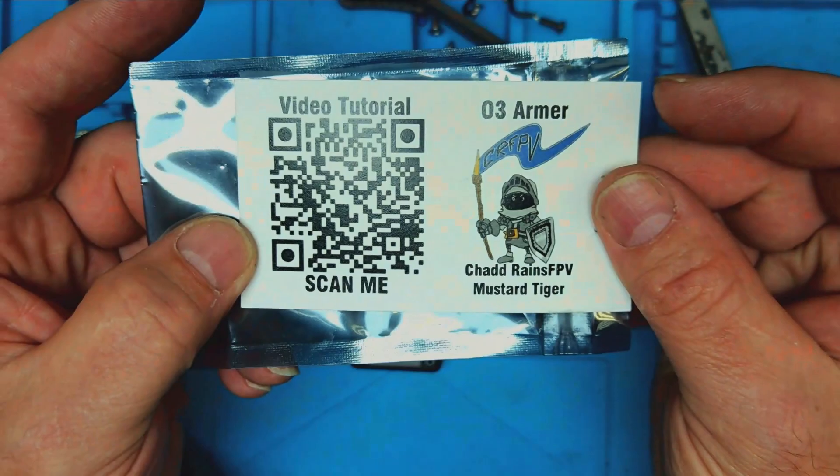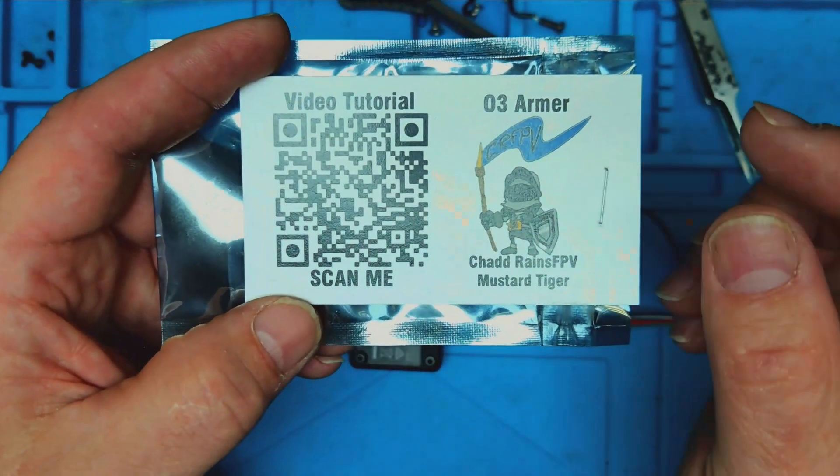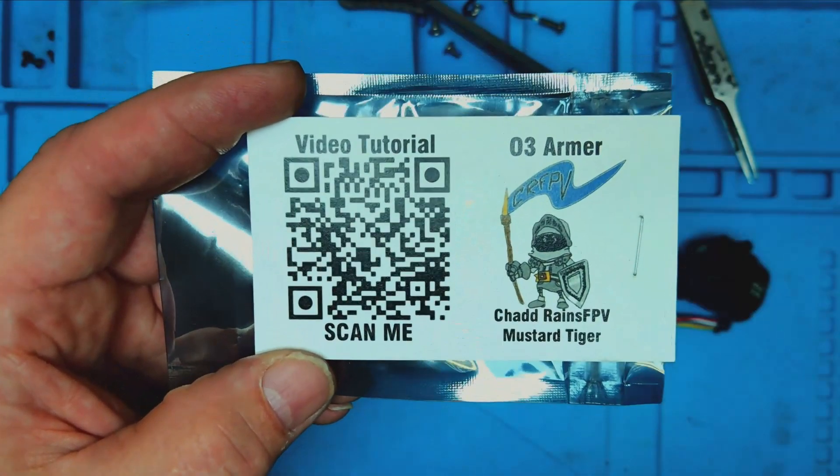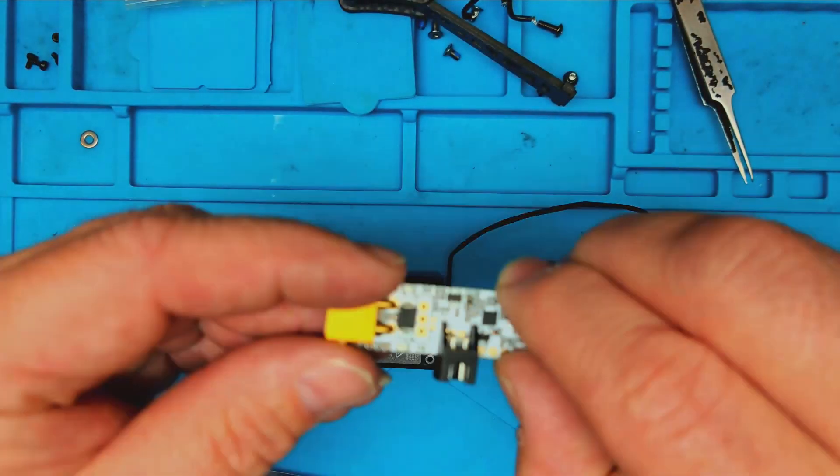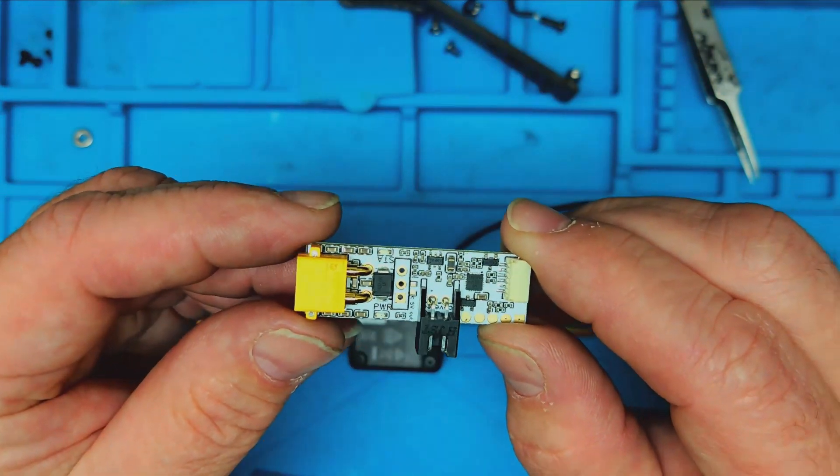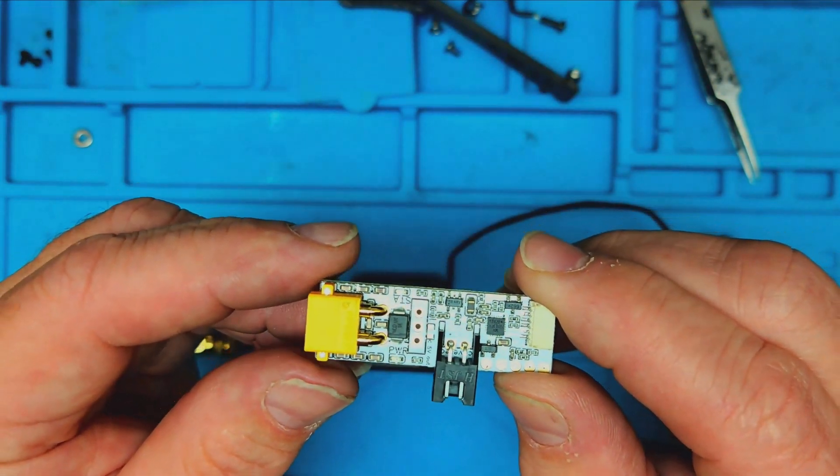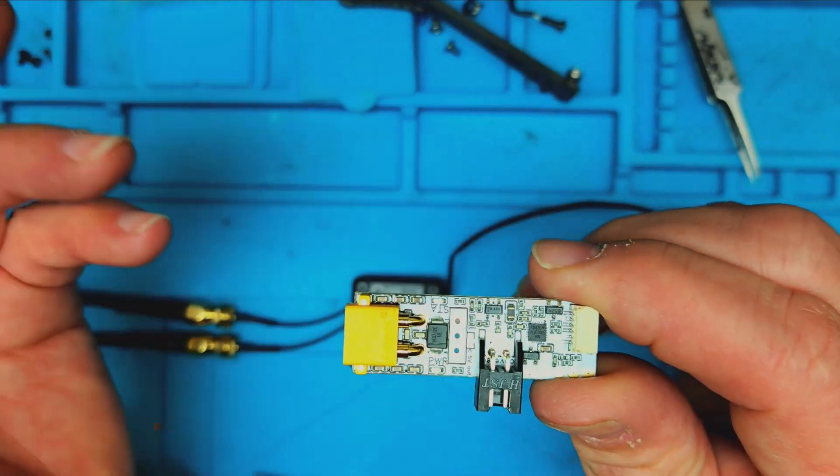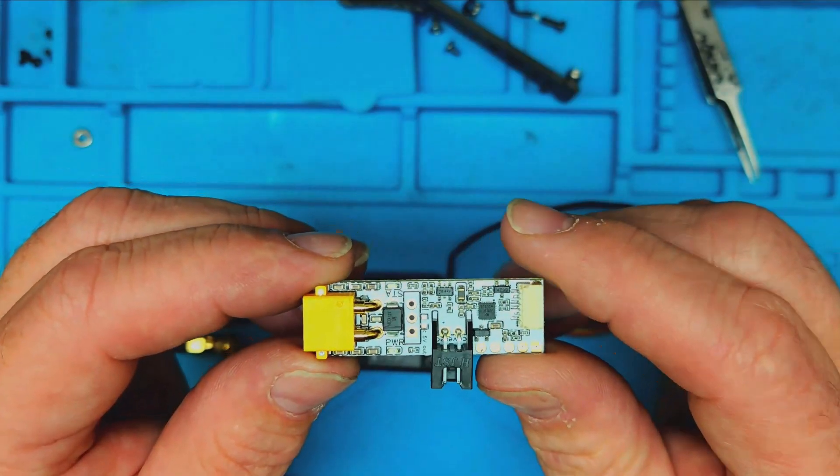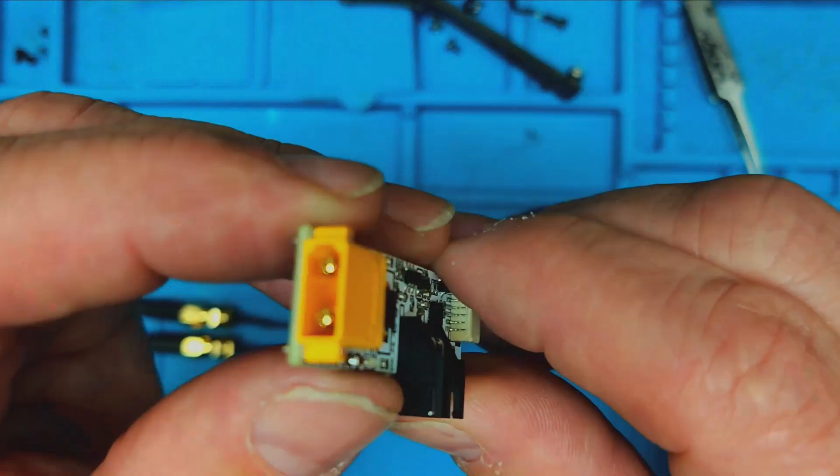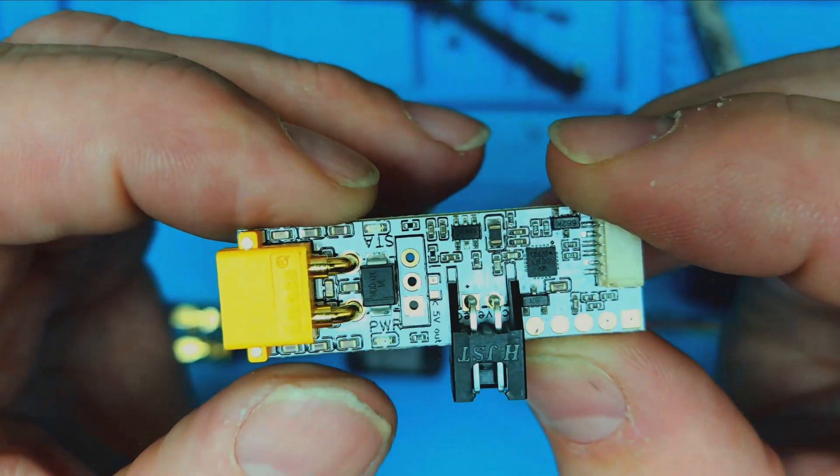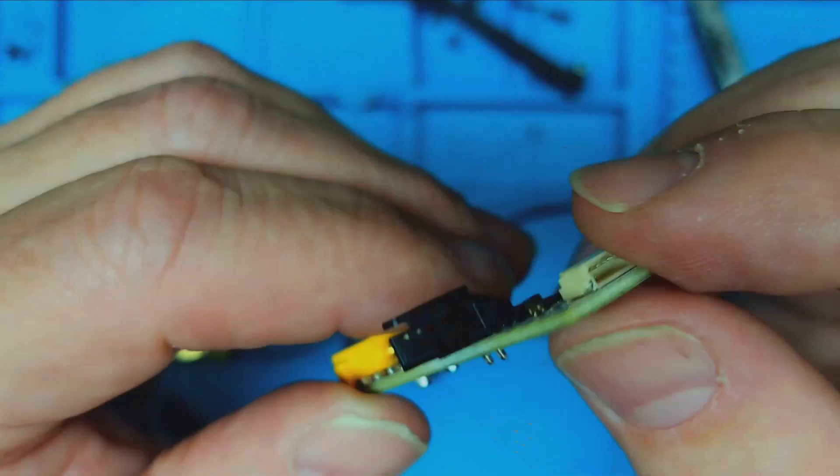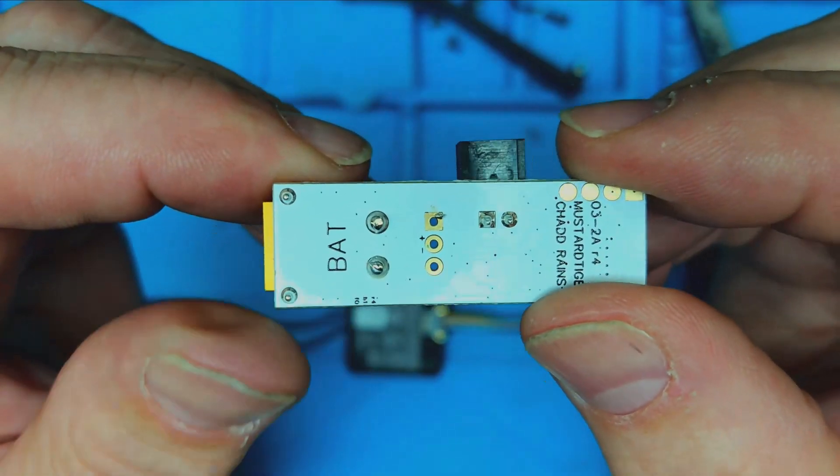We have an O3 armor. I had this device when I had the O3s, but I'm no longer needing it. This device sends arming current to the O3 to turn it on. It can be used in wings and vehicle applications where you don't have a flight controller. I will put the link in the description below.